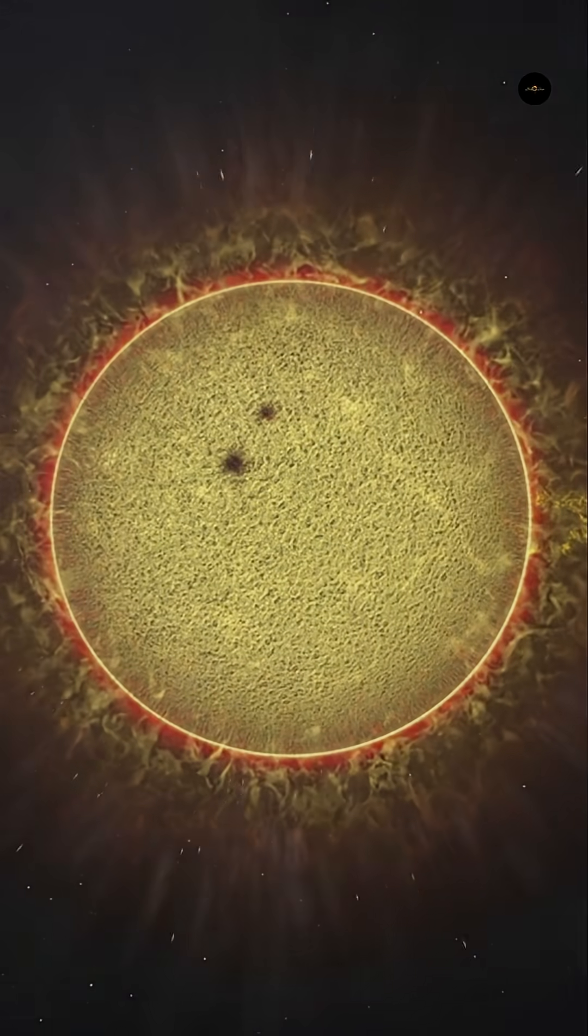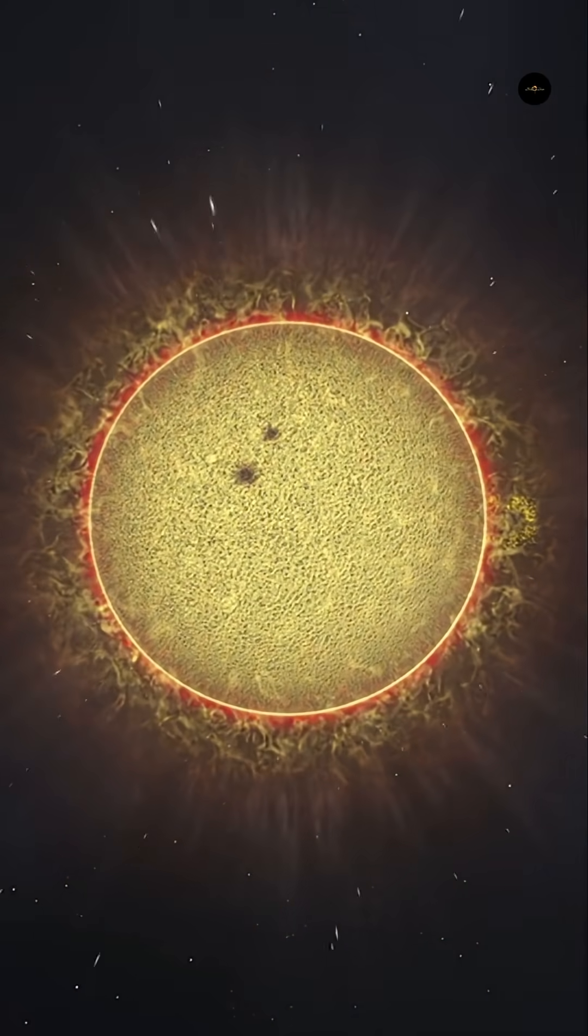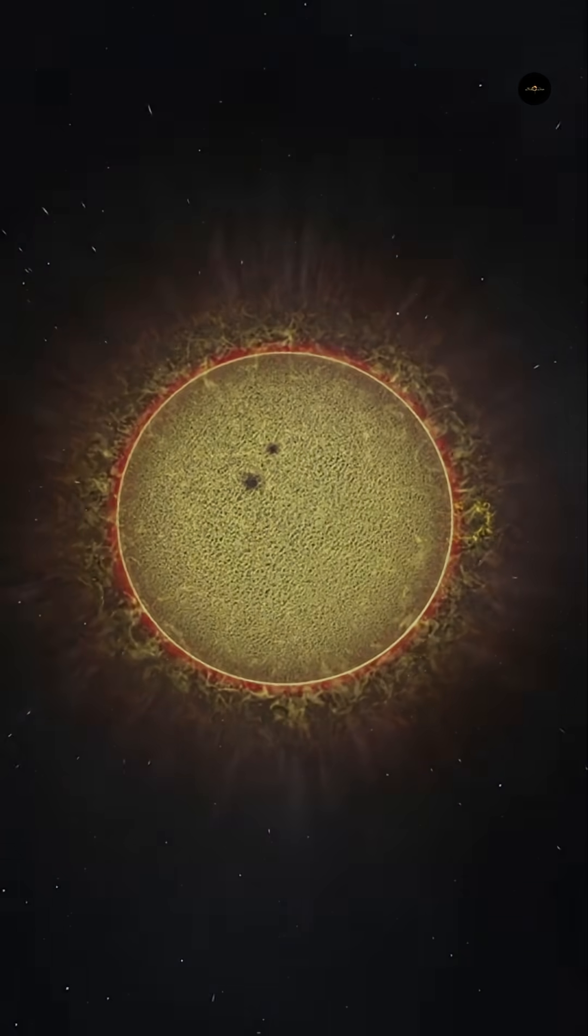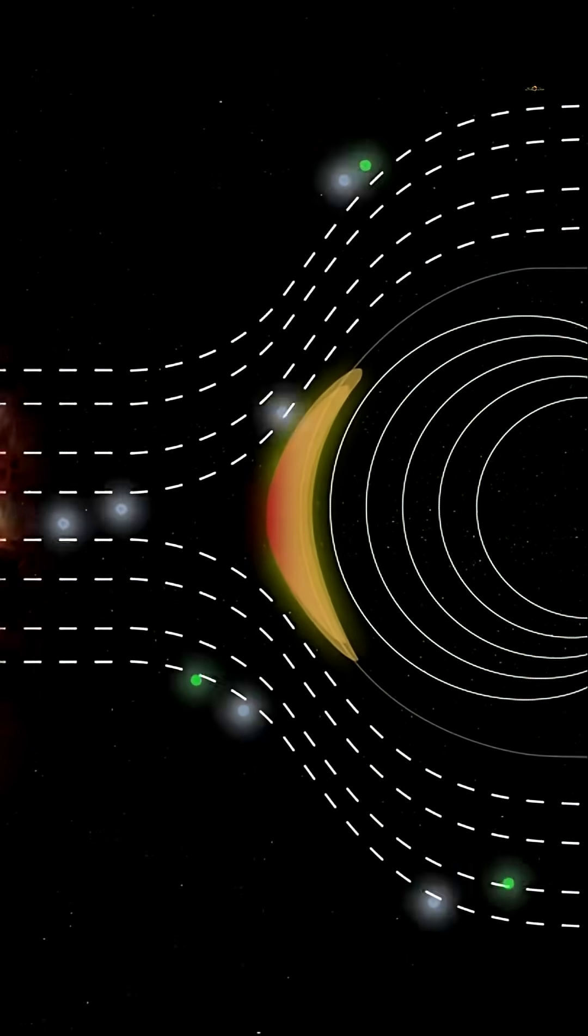This phenomenon is not uniform. The fast solar wind, greater than 800 km per second, comes from active regions such as sunspots and flares. The slow solar wind, approximately 350 km per second, is more constant and comes from the polar regions.